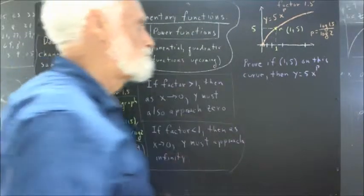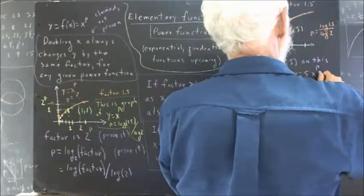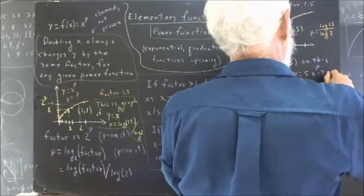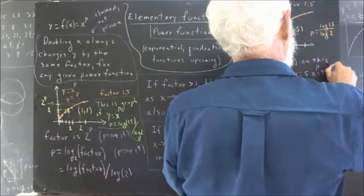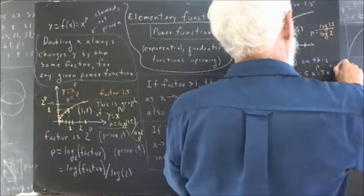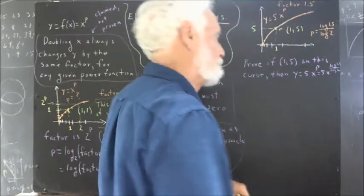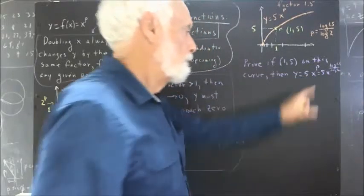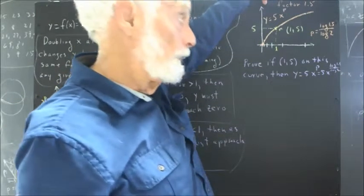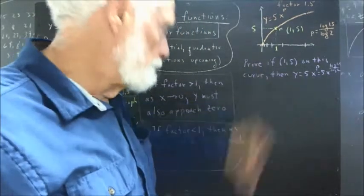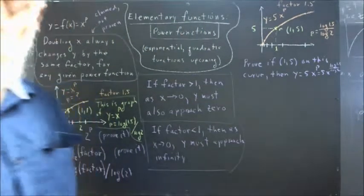Which is, of course, I don't have room to write it, 5x to log of 1.5 over the log of 2. Now, you really can't read what I just wrote there. But we understand that for this specific graph, p is log of 1.5 over log of 2. I could have written it on another line if I'd have had a little more foresight.